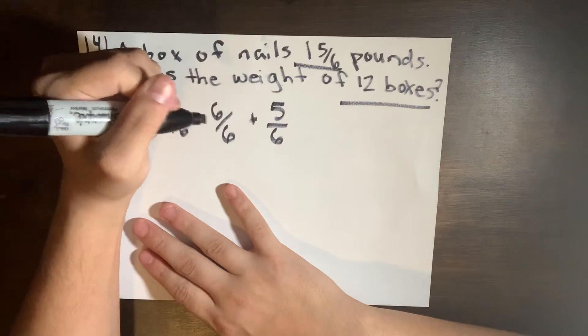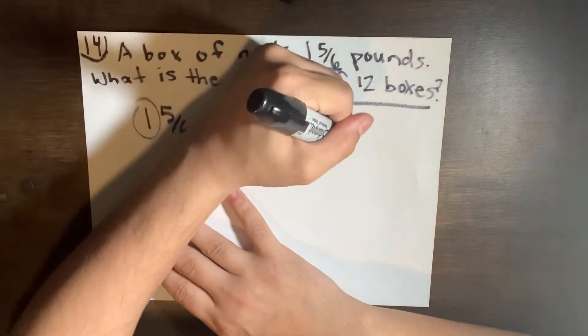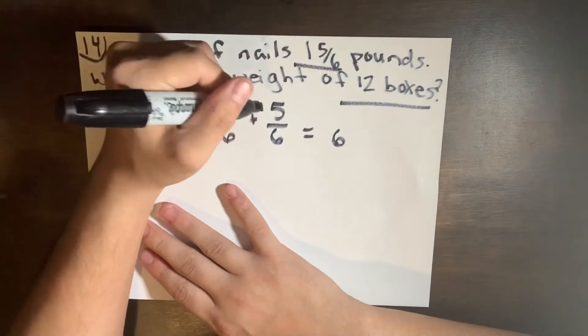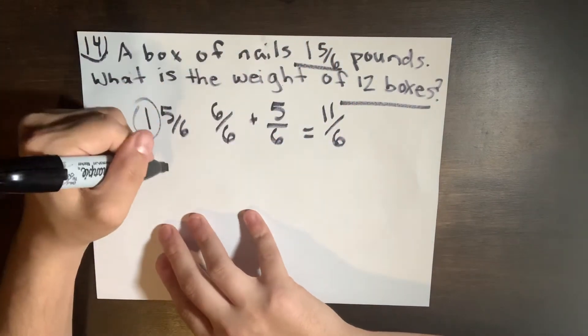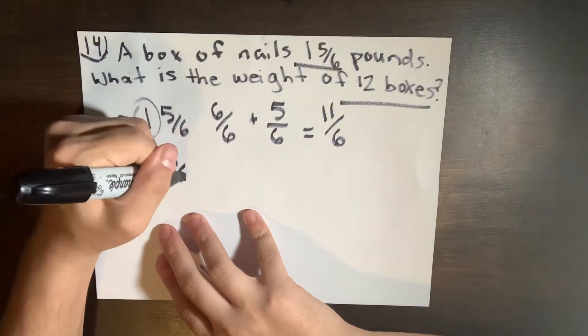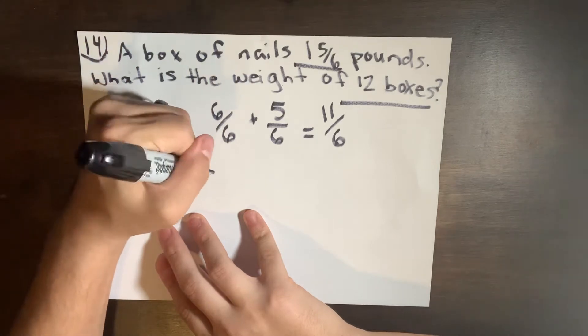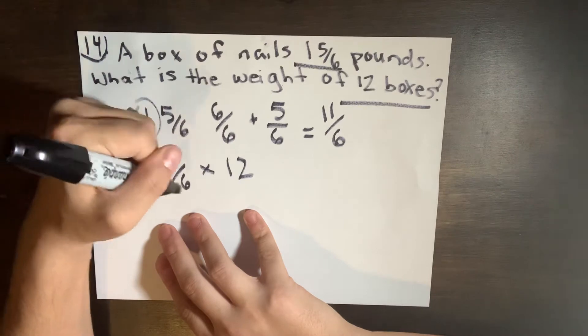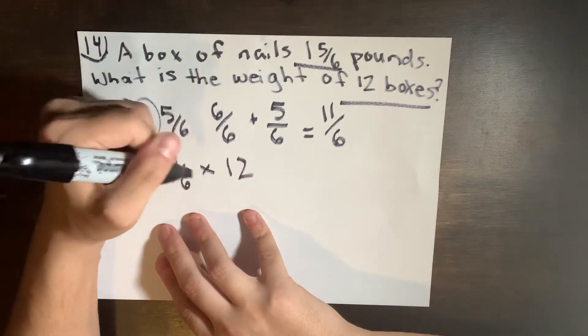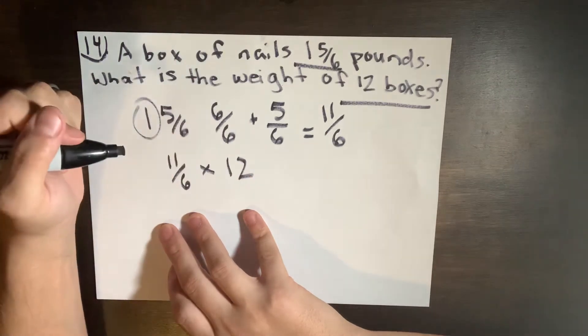We're going to add 6/6 plus 5/6, right? Because they're both the same denominator, you're not going to be actually adding them. Six plus five will equal eleven, so now we have 11/6 times 12 boxes. Now we're not going to be able to times this into just twelve itself, so once again we're going to turn this into a fraction, that'll make it 12/1.